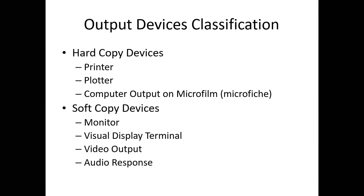Output devices are classified into two categories. The first is hard copy devices — devices that produce output you are able to touch. For example, a printer: the content is printed on paper, and that printed paper is a hard copy. So hard copy devices produce output in a physical, tangible form.